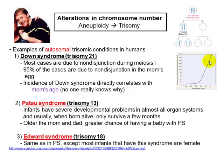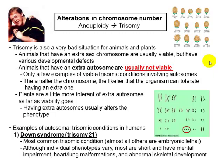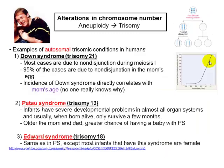Other syndromes caused by trisomy include Patau syndrome, or trisomy 13. Chromosome 13 is a lot bigger than chromosome 21, so most of the time trisomy 13 is lethal. When it does occur, you develop Patau syndrome — these children are severely developmentally impaired and have developmental problems in almost all organ systems. If they are born alive, they will die very, very young. They usually do not survive more than a few months.